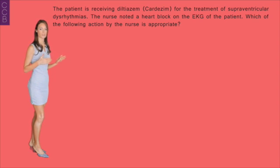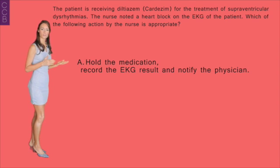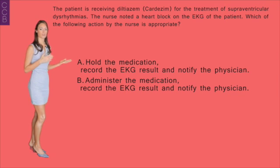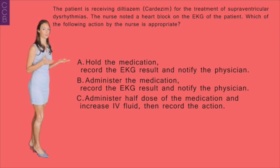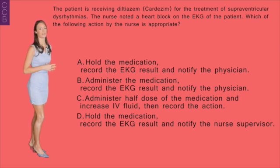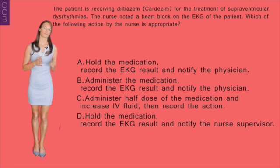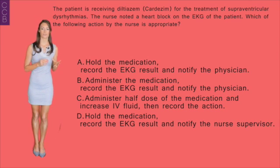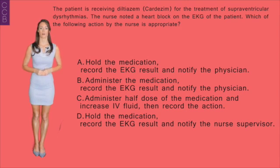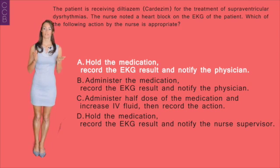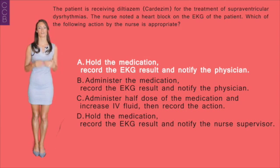Question 3: A patient is receiving diltiazem for supraventricular dysrhythmias. The nurse notes a heart block on the EKG. Which action is appropriate? A) Hold the medication, record the EKG result, and notify the physician; B) Administer the medication, record the EKG, and notify the physician; C) Administer half the dose, increase IV fluid, then record the action; or D) Hold the medication, record the EKG, and notify the nursing supervisor. Diltiazem is contraindicated in patients with sick sinus syndrome, heart block, hypotension, cardiogenic shock, and heart failure, as it can cause lethal ventricular dysrhythmias. Since the patient already has a heart block, giving diltiazem could worsen the conduction problem. The correct answer is A.